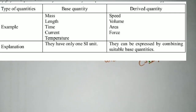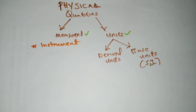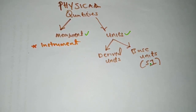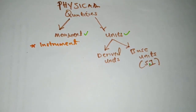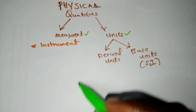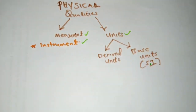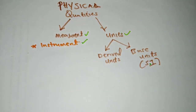So if you haven't watched our previous video, you can watch our previous video on physical quantities, introductory physics. So now, we talked about measurement, and we need to measure these physical quantities. In measuring physical quantities, you need an instrument. So we have instruments under physical quantities.